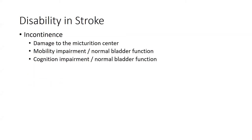Incontinence, mainly of urine, is a major drawback to independence after stroke, because it affects a person's confidence in social settings. Uncommonly, it can be due to damage to the micturition center as part of the stroke, but patients with normal bladder function can also have incontinence due to mobility impairment or cognitive impairment.